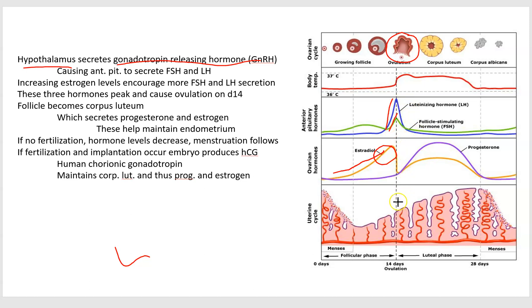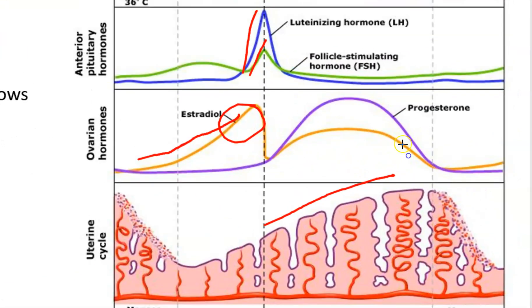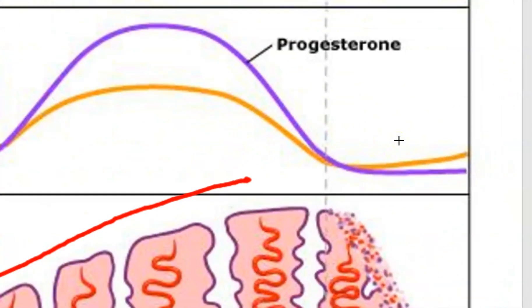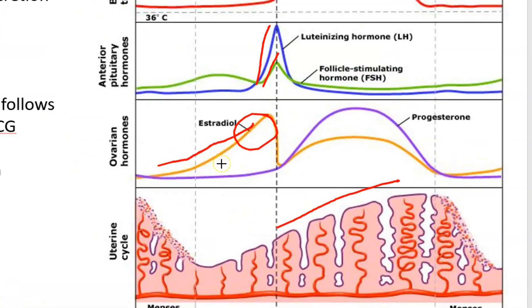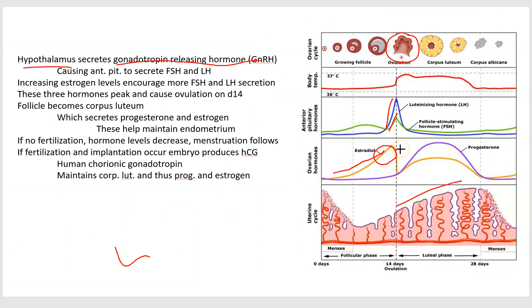Coming down off of that, we're going to have the endometrium getting thicker and thicker, because of the estrogen and progesterone levels spiking again due to the existence of the corpus luteum. So the corpus luteum starts to produce estrogen and progesterone again, which causes the endometrium to get thicker and thicker. If there's a pregnancy, the embryo is going to implant. If not, the corpus luteum degrades, stops producing estrogen and progesterone, and you're going to have menstruation.